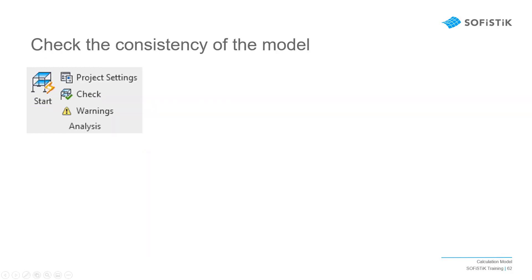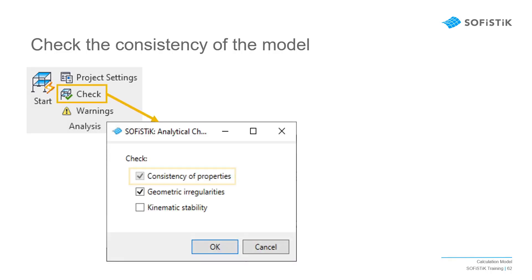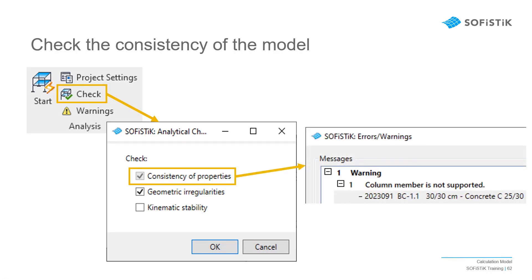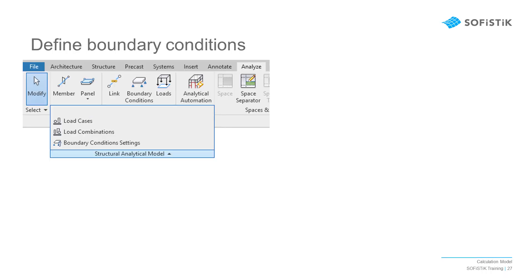Once all these definitions have been made, we have to make sure that everything is coherent and that we haven't forgotten any step. With the command Check, you can verify the consistency of the properties or the geometrical irregularities. The software will then scan the model and list the potential errors or warnings. You can then visualize and isolate the corresponding elements to proceed with any modification. Obviously, we get a warning for our project since no boundary condition has yet been defined.